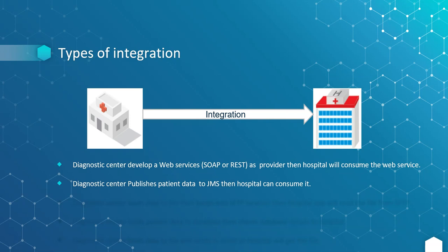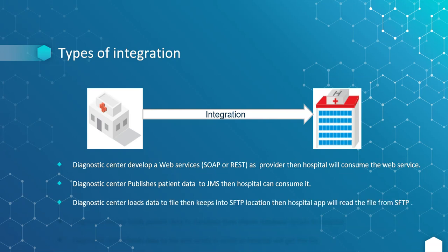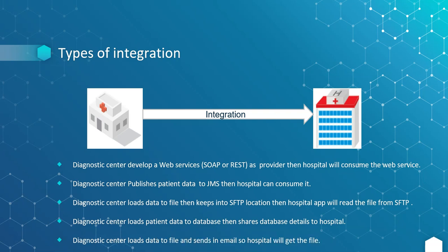Another way: diagnostic center developers can publish the patient data to JMS, then the hospital can consume the data over JMS as a messaging approach. Or the diagnostic center can load the data to a file, then keep it in an SFTP location, and the hospital can get the data by connecting to the SFTP location. Or the diagnostic center can load patient data into a database, then share the database details with the hospital, so the hospital can get the patient information. Or the diagnostic center loads data to a file and sends it via email, so that the hospital will receive the file.